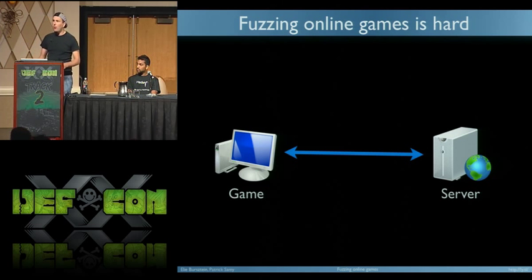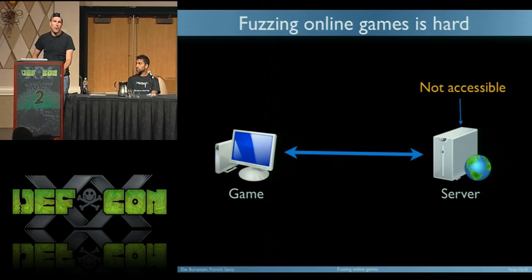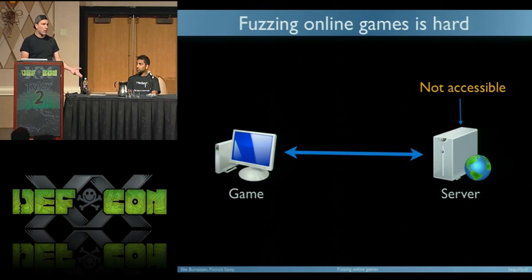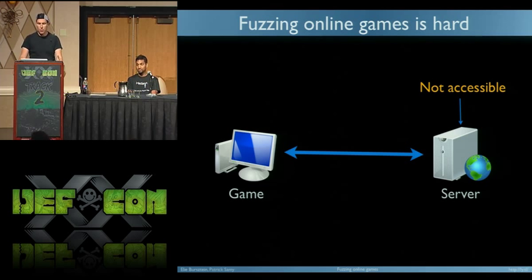Why is fuzzing an online game so hard? In theory it's super simple — you have a server and you have a game. But there are a few complications. First, you don't have the server. When you fuzz Apache or an FTP server you usually have the binary so you can instrument it and relaunch it. When you are fuzzing games, you don't. The server is something completely out of your reach. You don't know how it works, how it's run, or on which platform it runs. It's completely obscure to you.